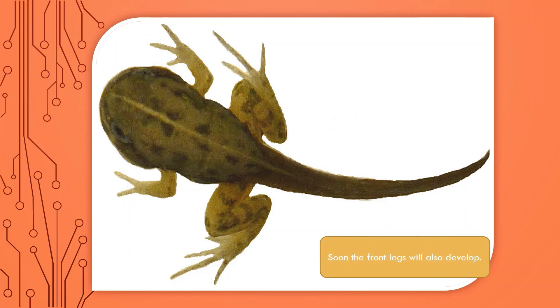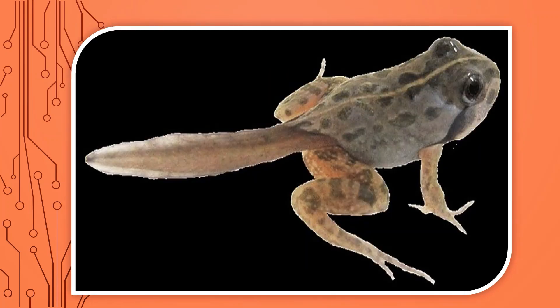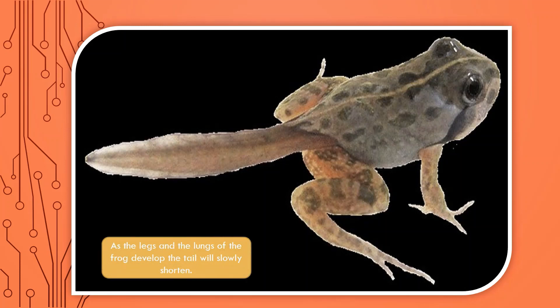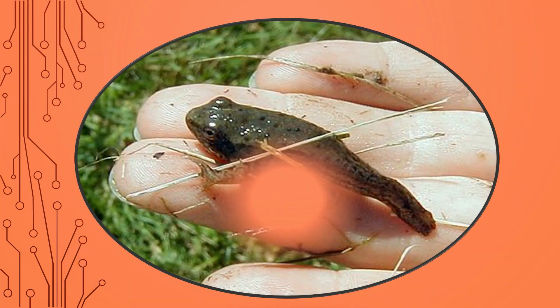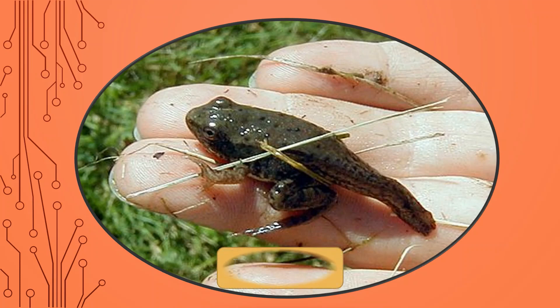their tails will slowly shorten and their lungs will start to develop. Soon, the front legs will also develop. Bit by bit, the tiny tadpole with hind legs will grow into a young frog. As the legs and lungs of the frog develop, the tail will slowly shorten. Look! This is an adult frog. Look at the tail. It is short.